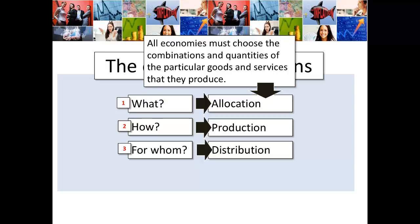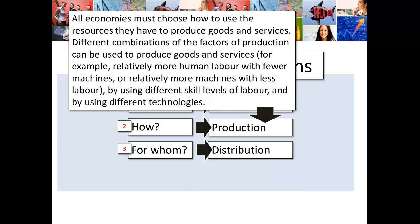How are we going to produce these goods? All economies must choose how to use the resources they have to produce goods and services. Different combinations of the factors of production can be used — lots of human labour with fewer machines, or relatively more machines with less labour — and by using different skill levels of labour and different technologies in the production process.